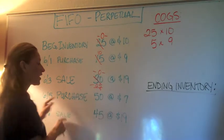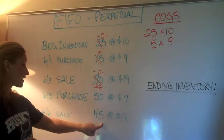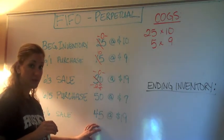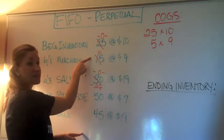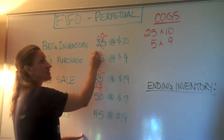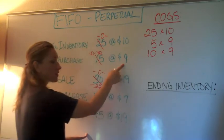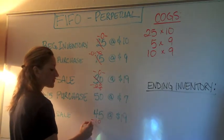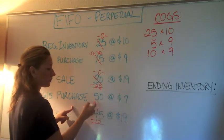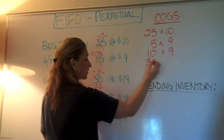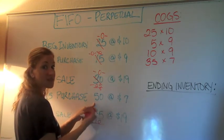We have 10 units remaining, then a purchase on June 5th for 50 units at $7, followed by a sale of 45 units the next day. Using FIFO, I go back to the oldest remaining purchase — those 10 units — bring them to zero and move them to cost of goods sold. Then 45 minus 10 gives us 35 more units to find. We grab 35 units from the June 5th purchase at $7 each, leaving 15 units remaining from that batch.